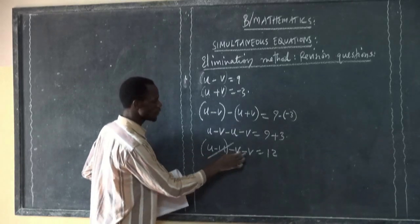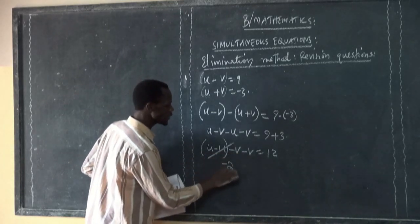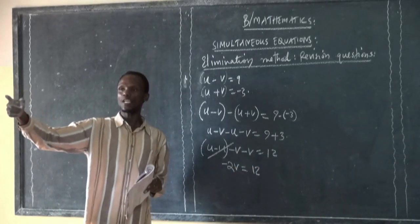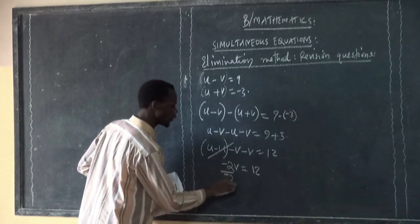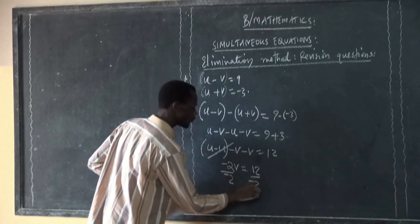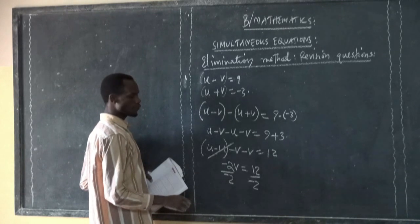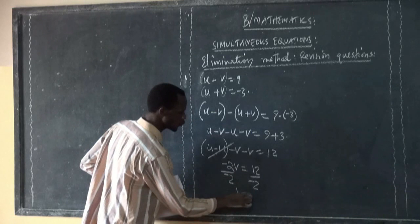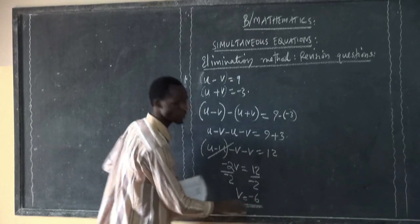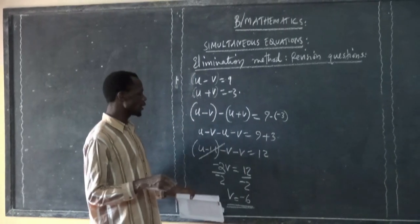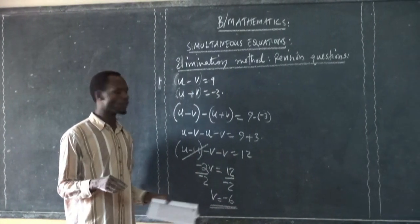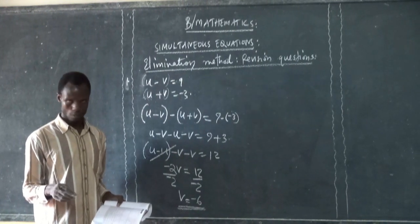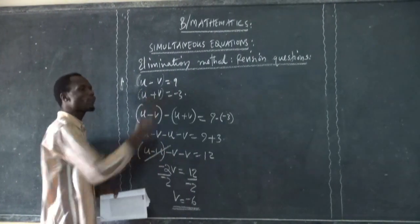We have negative V and negative V, giving us negative 2V is equal to 12. Dividing, V is equal to negative 6. This is the value of V. But we are not looking only for the value of V — we are looking for both V and U, so we need to choose one of the equations.